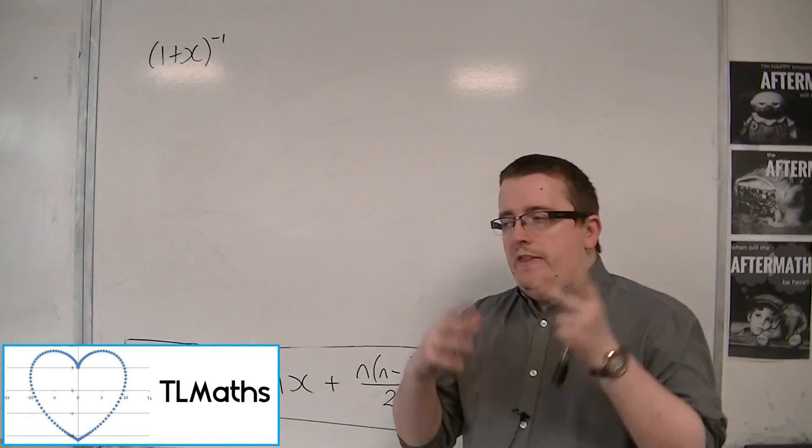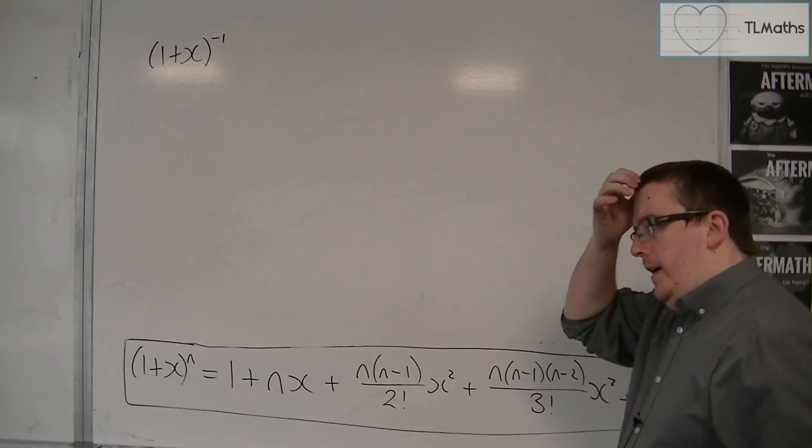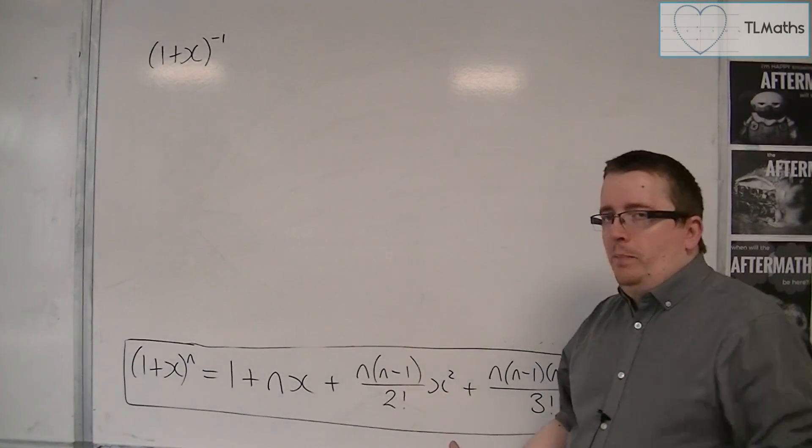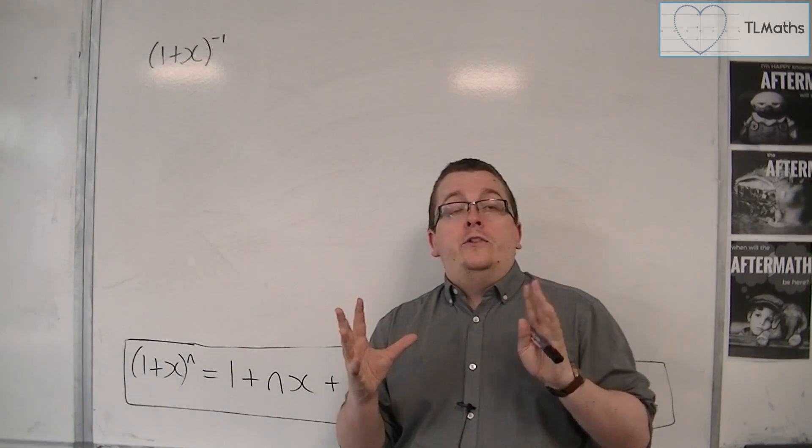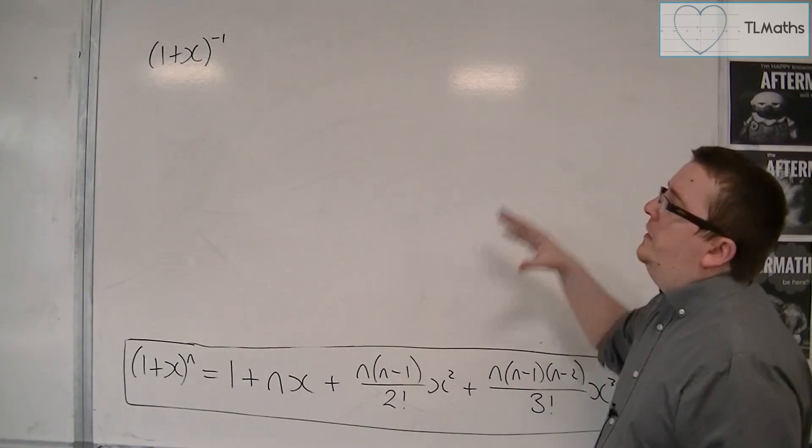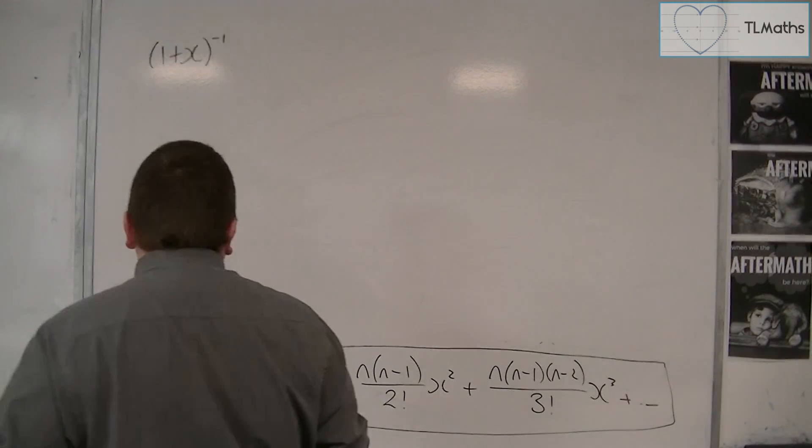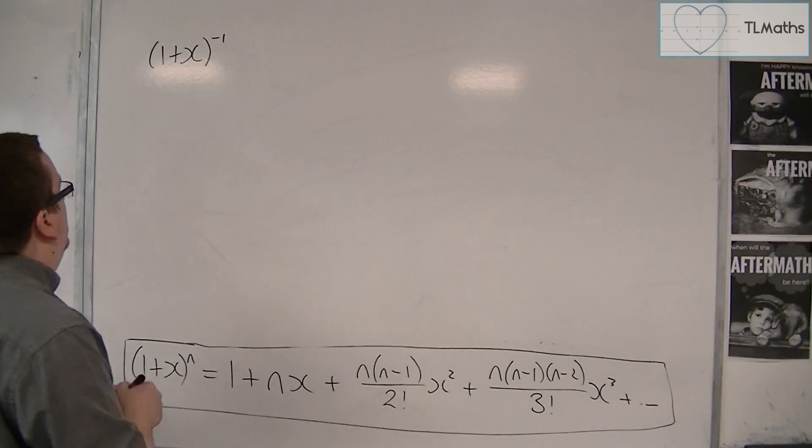In this video, we're going to look at why the binomial expansion is only valid for a certain range of values of x. I'm going to do this through an example. We're going to look at 1 plus x to the minus 1, and we're going to expand that for the first few terms, just so we can get an idea of what it looks like to start off with.